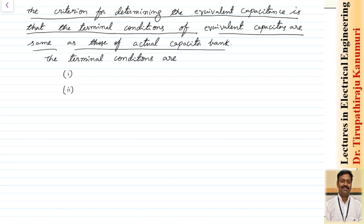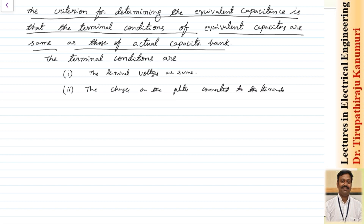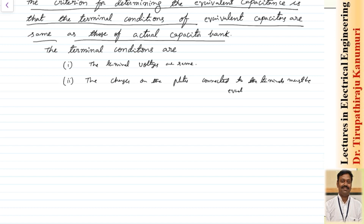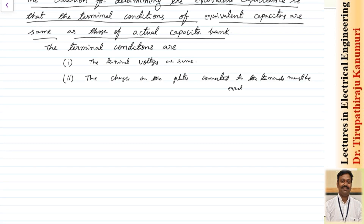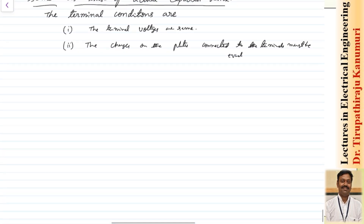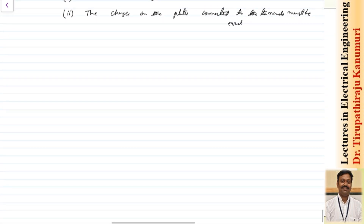The terminal conditions we have to keep the same are: first, the terminal voltages are same; and second, the charges on the plates connected to the terminals must be equal. If these conditions are fulfilled, then the equivalent circuit we are calculating will have the same energy stored, because energy stored equals half CV squared where C equals Q divided by V. It depends on the charge as well as the voltage, so if these conditions prevail, the energy stored is same.